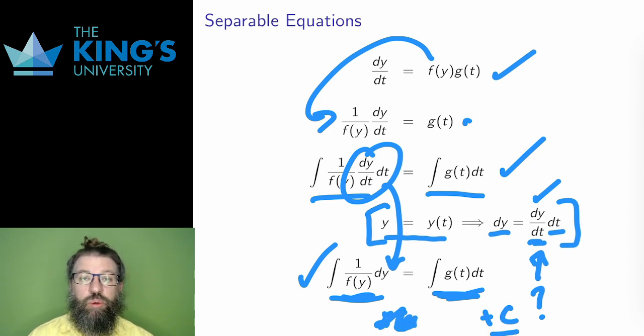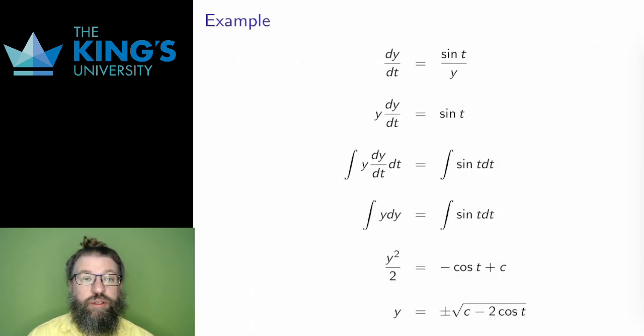Now let's actually solve a separable equation. This is separable. The left side is the product of 1 over y, and sine t. I want to take all the y variables to the left, so I multiply by y on both sides to do this. Then I integrate.